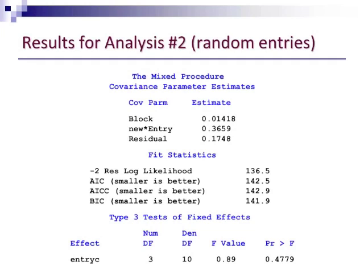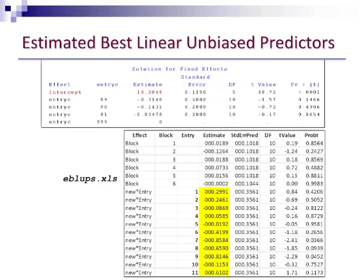Again, we have then the FIT statistics, which we could use if we wanted to compare one model against another. And then at the bottom there, we have a test of fixed effects. This includes all the three controls, and then it also includes the average of all of the new entries, and that's why we have three degrees of freedom. So you can see here that there actually isn't any significant variation among the controls.